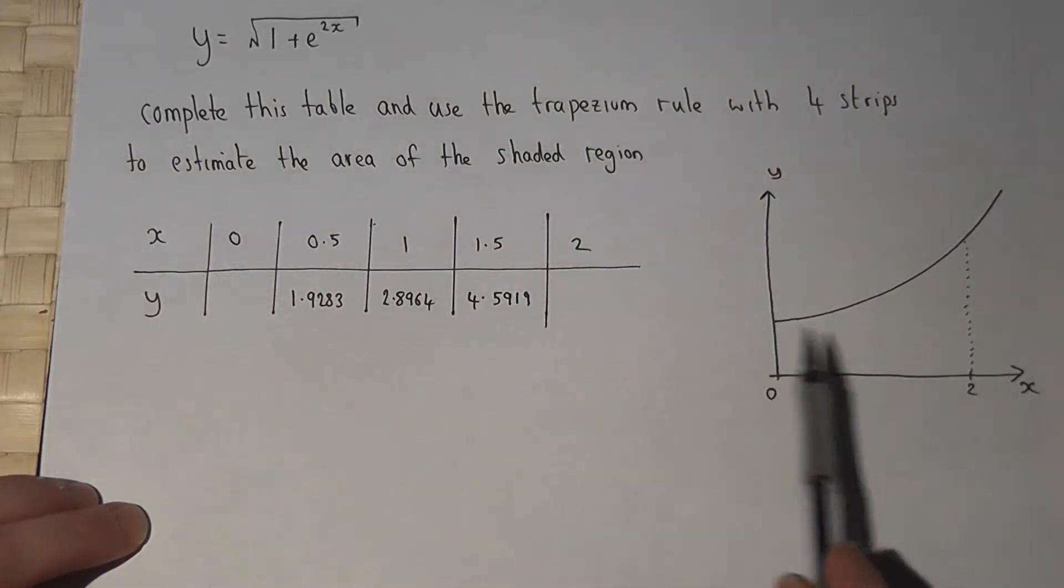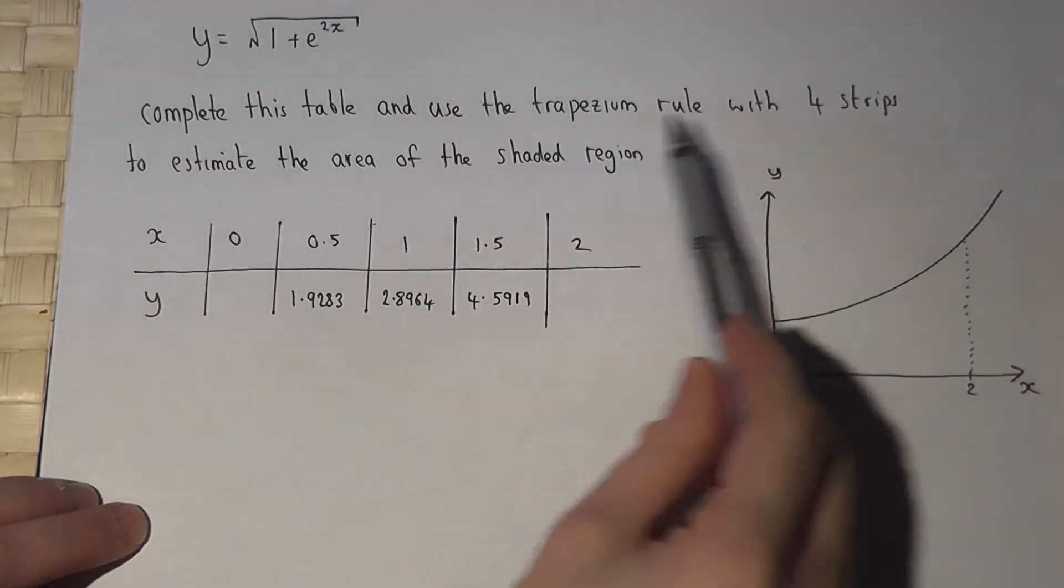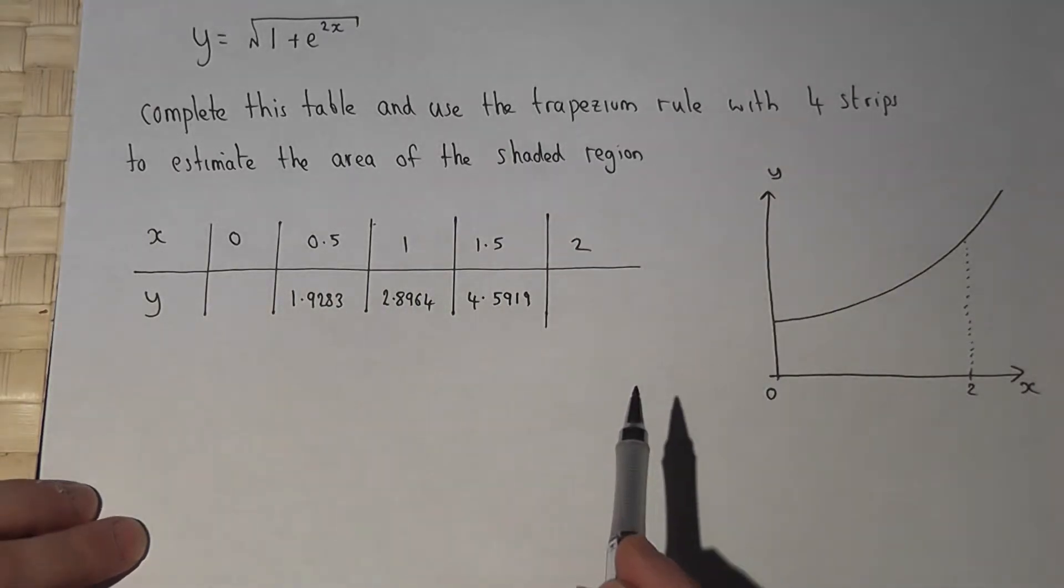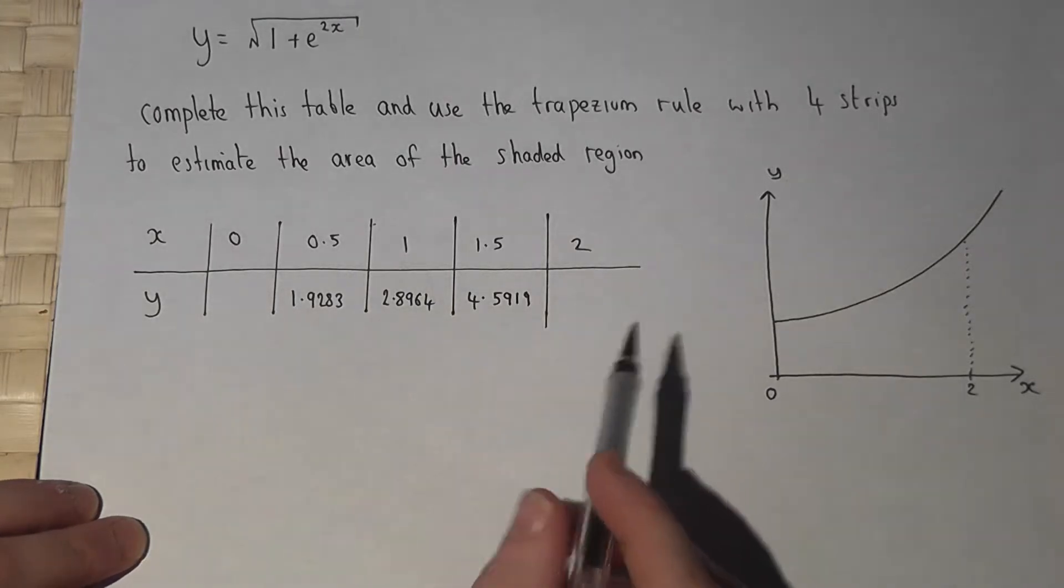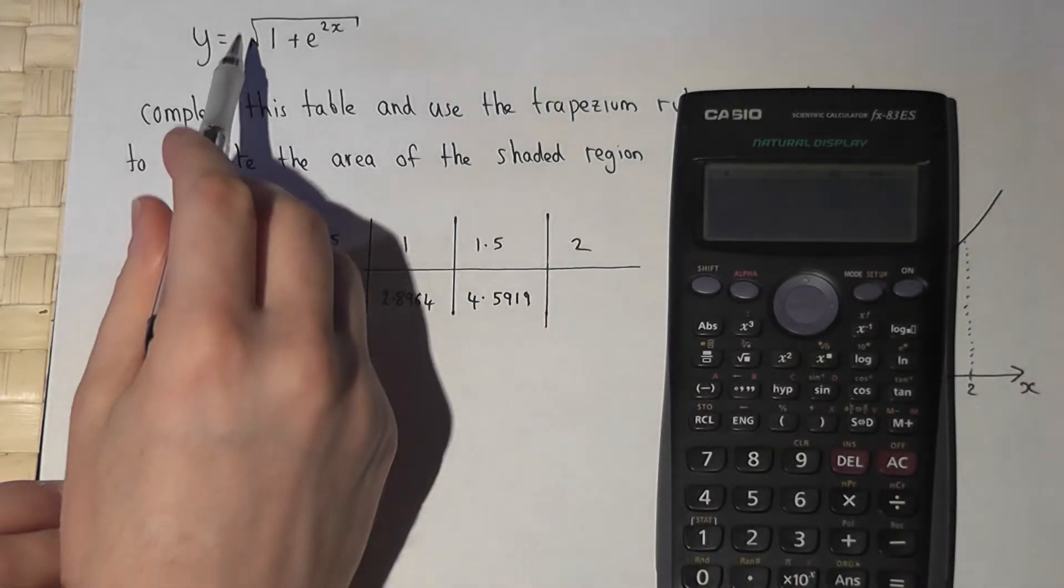In this question we estimate the area under this graph using the trapezium rule with four strips. We're first of all asked to complete the table. Now we're given the function and the function is the square root of 1 plus e to the power of 2x.